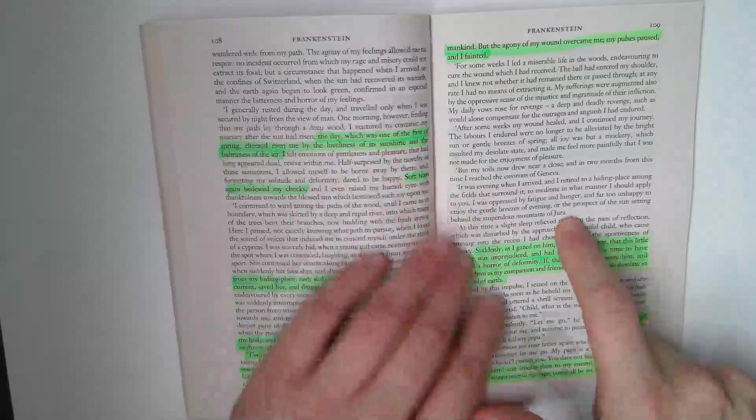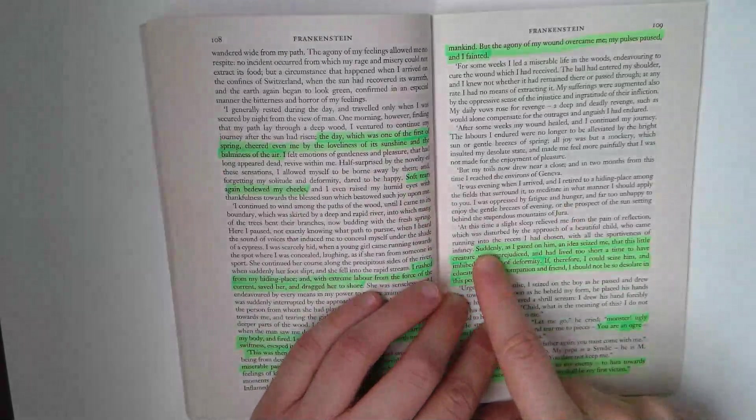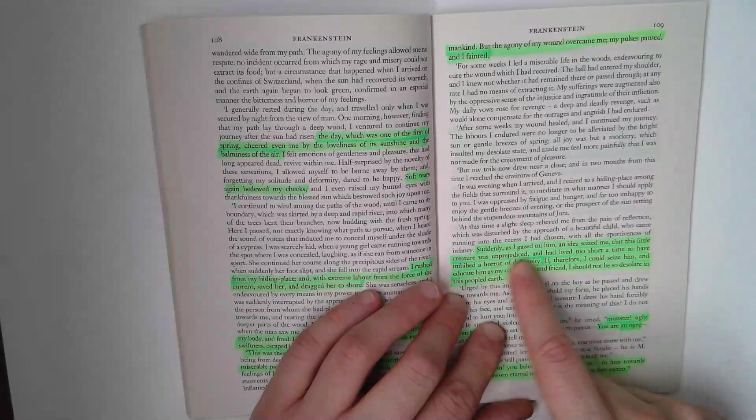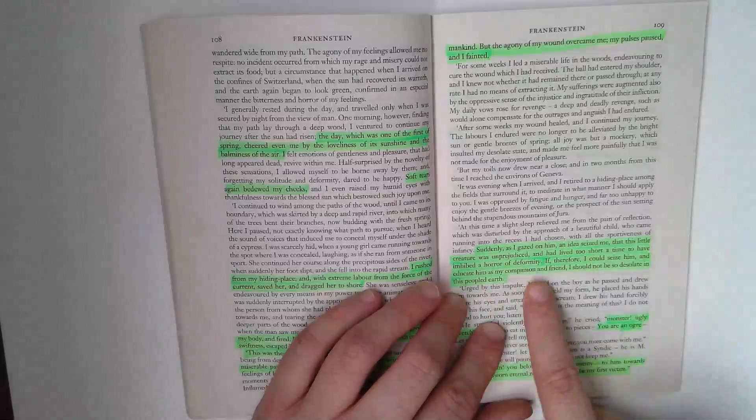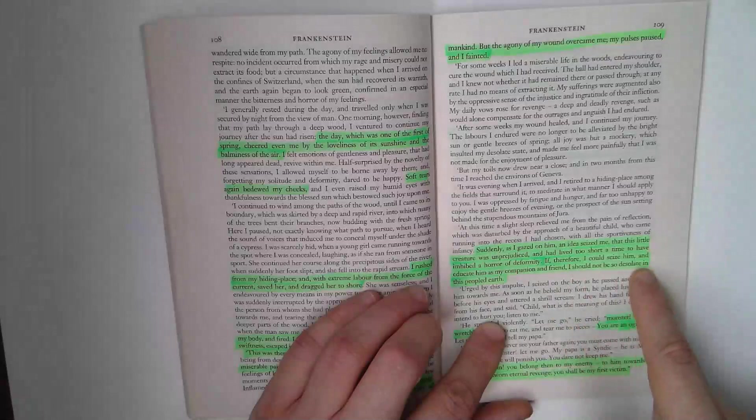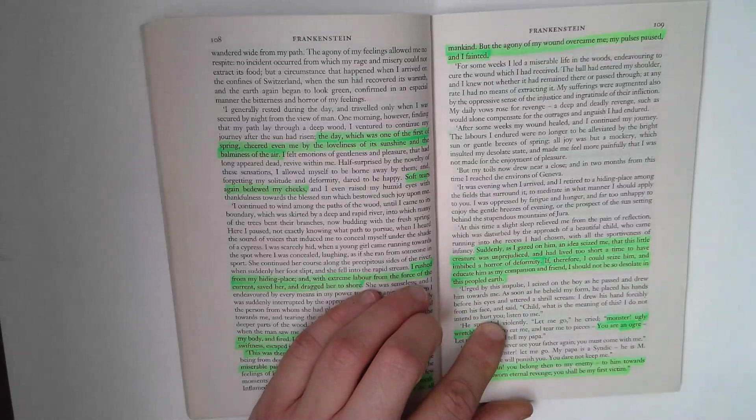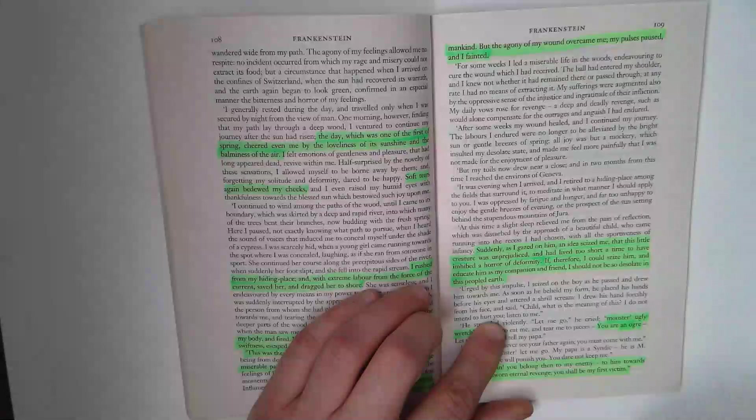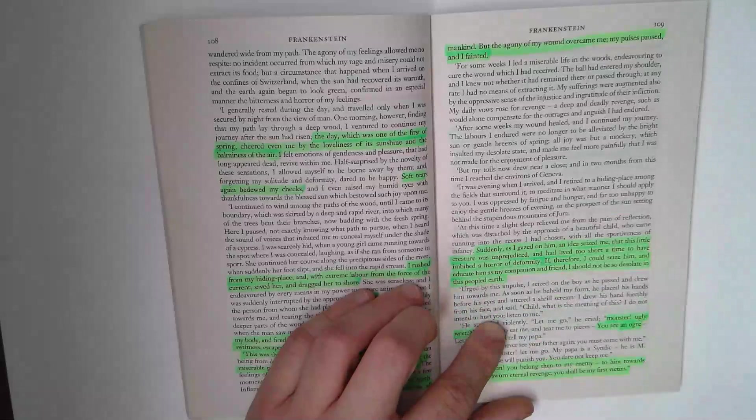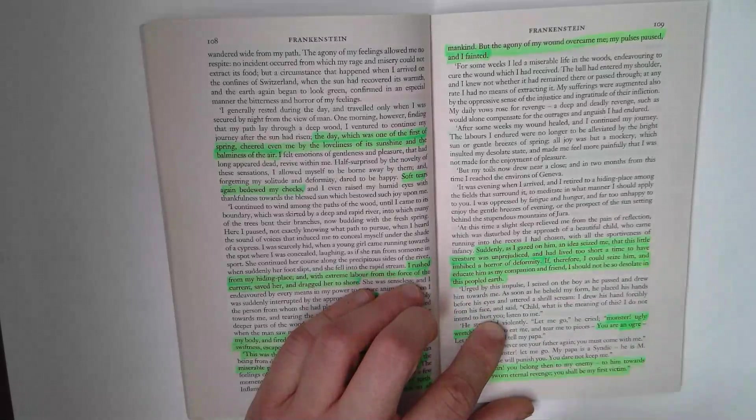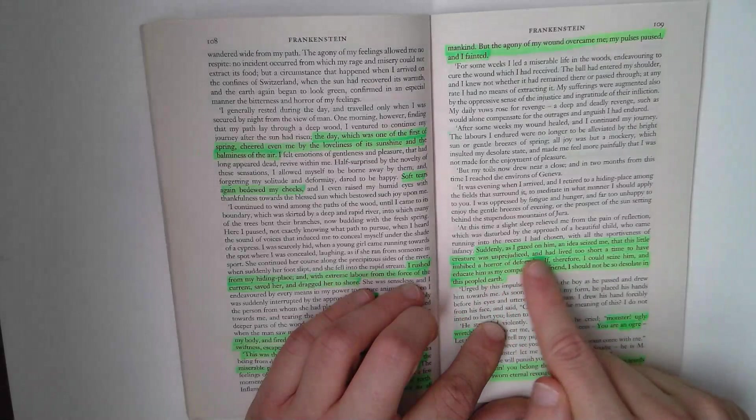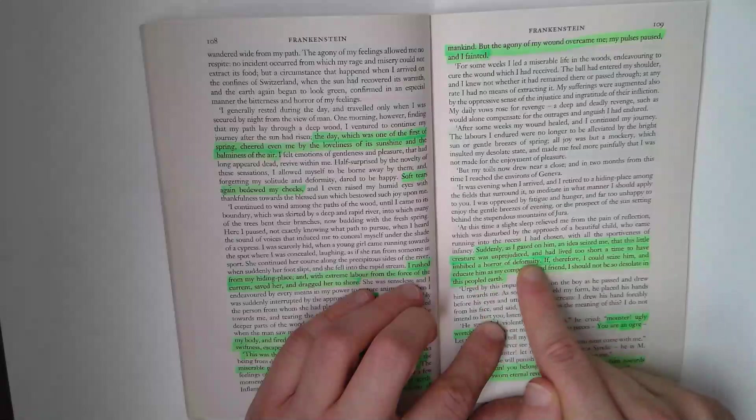Of course, he approaches Geneva and he sees young William Frankenstein. And as I gazed on him, an idea seized me that this little creature was unprejudiced and had lived too short a time to have imbibed a horror of deformity. If therefore I could seize him and educate him as my companion and friend, I should not be so desolate in this peopled earth. And it's an interesting point that Shelley makes here. First of all, again, the creature perhaps is his hamartia of putting his faith in humanity and the wrong people. This naivety really that William had lived too short a time to have imbibed a horror of deformity.